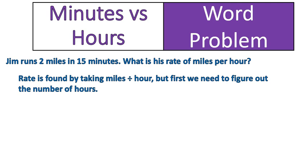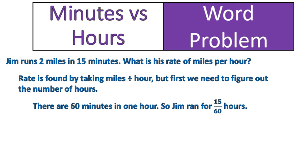First, we need to figure out how many hours Jim is actually running. What is 15 minutes as hours? To do that, we have to remember that there are 60 minutes in one hour. So Jim ran for 15 sixtieths of an hour. We don't need to simplify that fraction into lowest terms, although we could. We could make it into a decimal by doing division, but we can just leave it. 15 minutes is 15 out of 60 hours — 15 sixtieths.